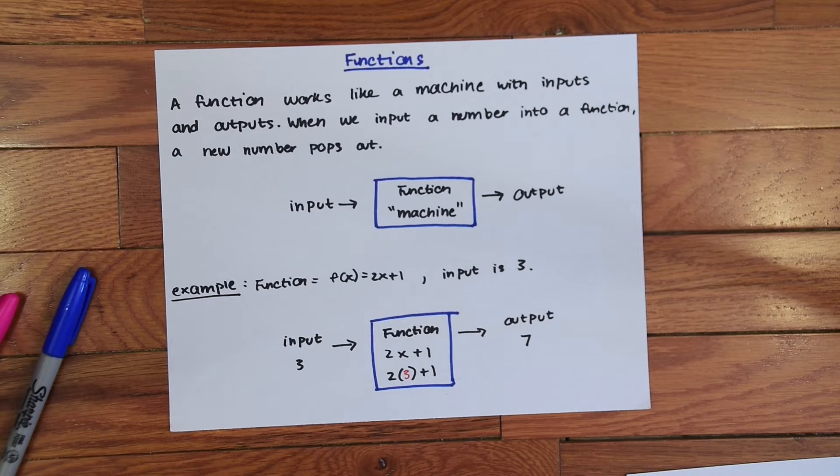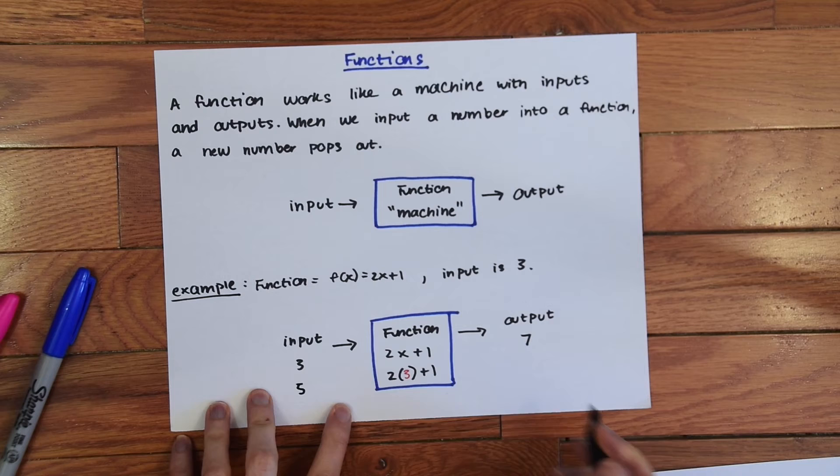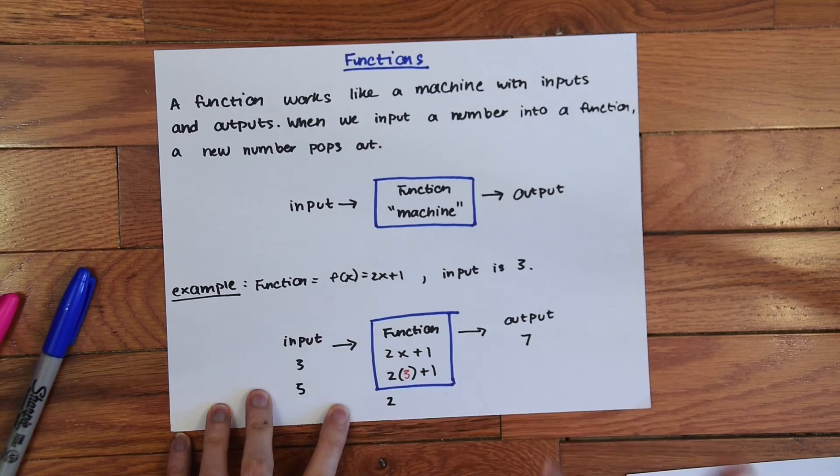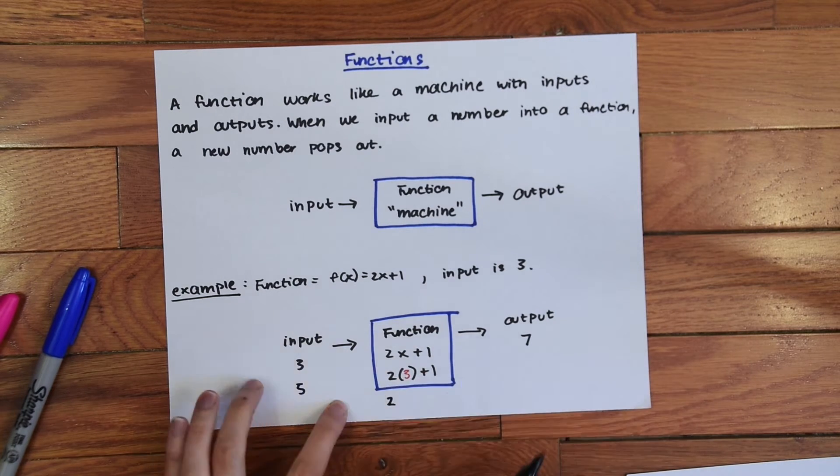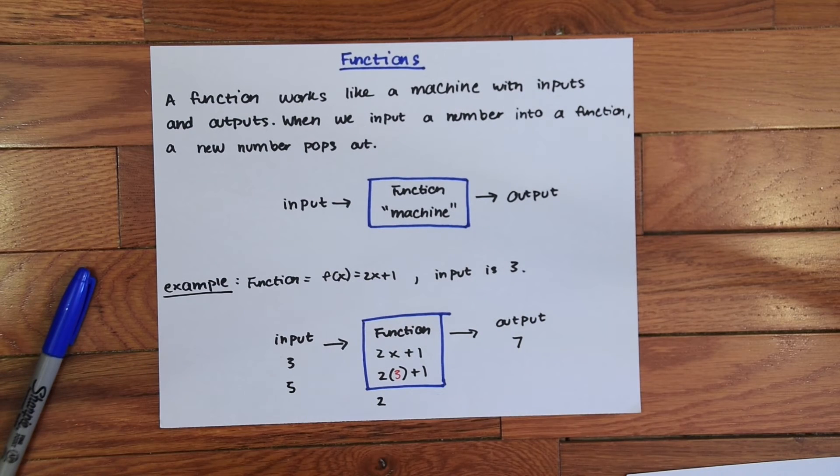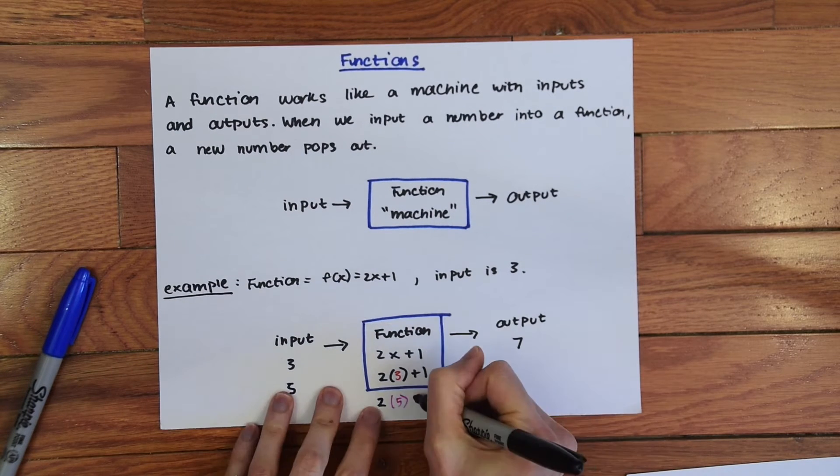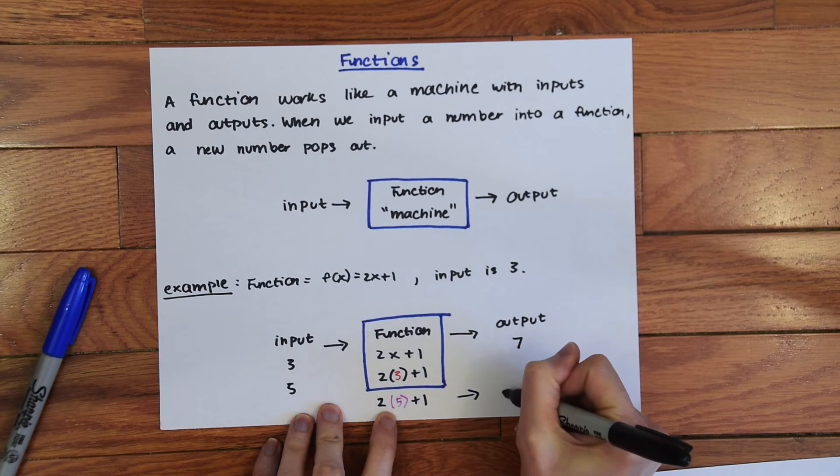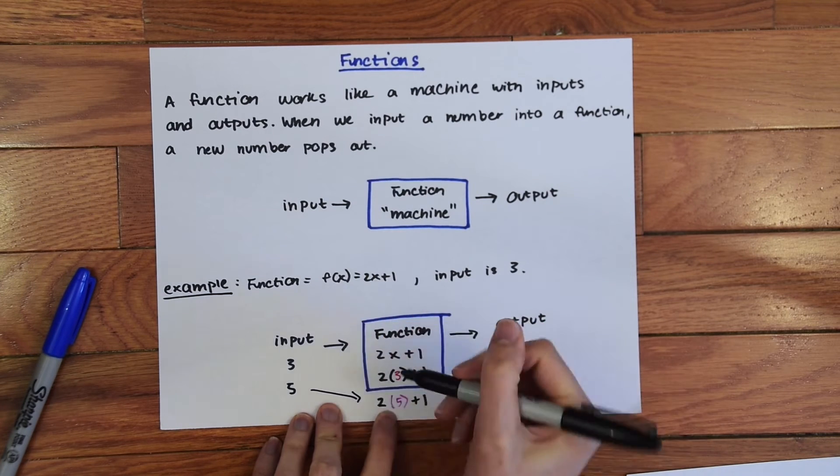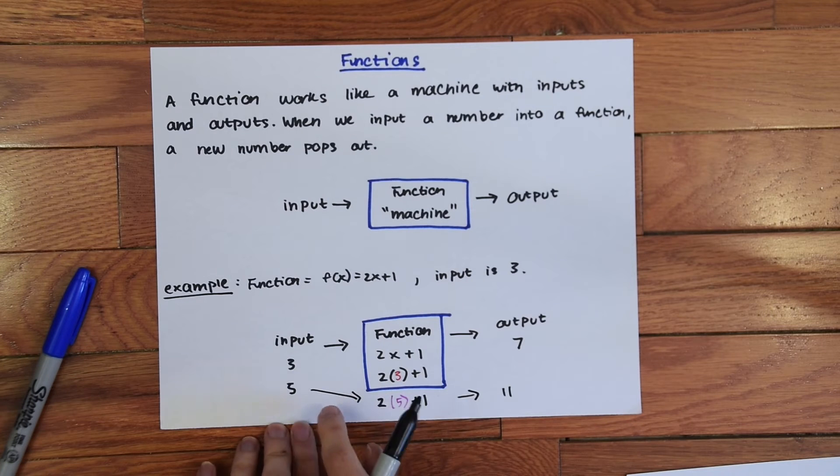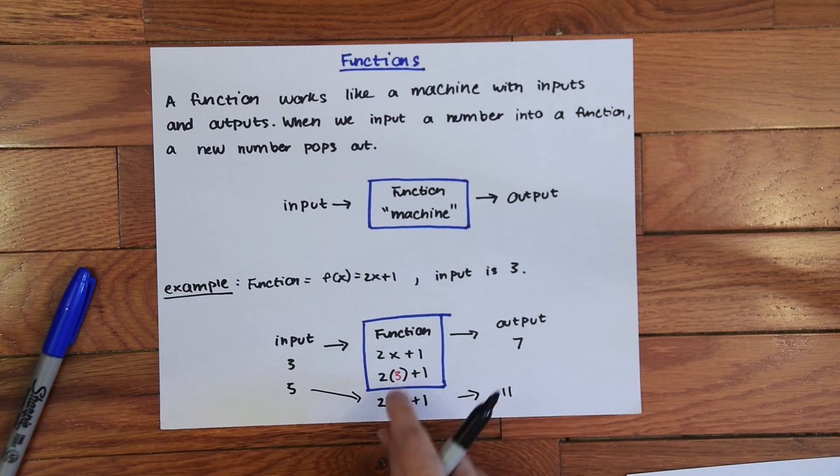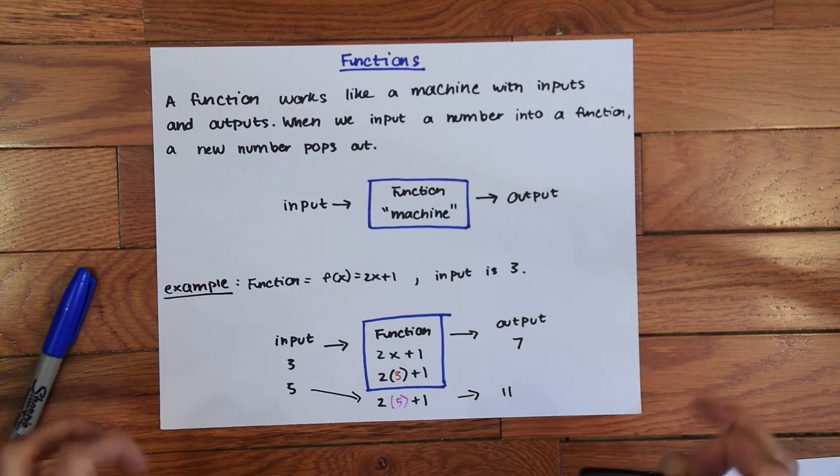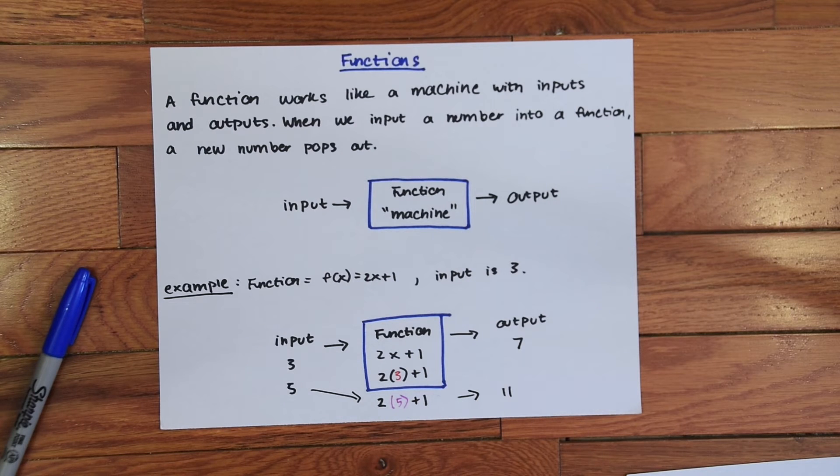But the thing about this is that we can input any number here. So if we wanted to input a 5 then we would put that into our function machine and we would be plugging in this time a 5 for x and then adding 1. So then our output would be 2 times 5 is 10 plus 1 and then our output would be 11. So when the input is 3 the output is 7 and when the input is 5 we get 11, just by plugging that into the function machine and plugging it in for the variable which in this case is x.